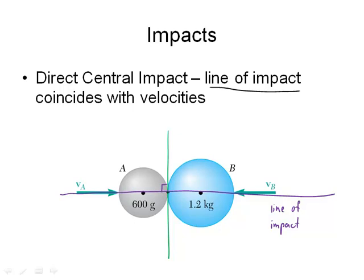And what you'll see here is that the velocities, here's the velocity of A and here's the velocity of B. The velocities are along that line of impact. Now, for different shapes, the line of impact will be in different directions. And we'll look more at that in the next lecture on oblique impacts. But for direct central impacts, the line of impact is along the velocities.